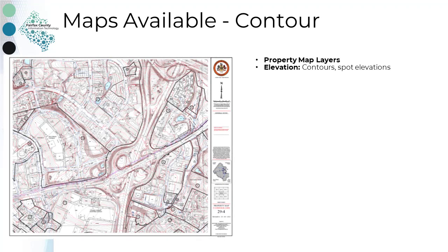The contour map illustrates ground surface elevation with contour lines, which are lines that join points of equal elevation. The most recent contour map available is from 2009. The contour interval is 2 feet and were derived from planimetric and topographic captures from imagery taken in 2009. The map collection also includes a 2003 map series, which contains contour intervals of 5 feet derived from planimetric and topographic captures from imagery taken in 1997. The contour maps also include all of the property map layers.